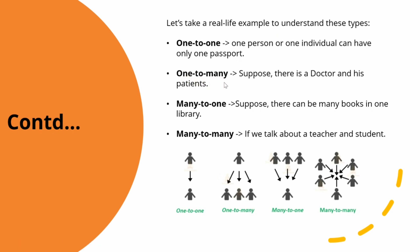One-to-many: suppose there is a doctor and his patients. One doctor is associated with many patients. So this is an example of a one-to-many association between a doctor and his patients.